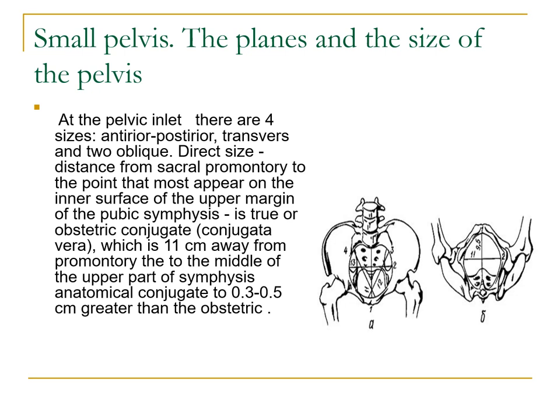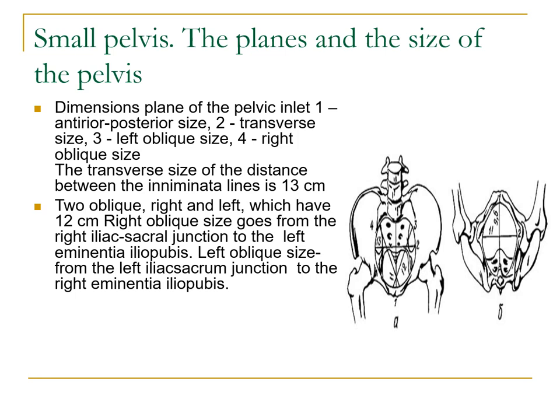At the pelvic inlet the four sizes are: anterior-posterior, transverse, and two obliques. The erect size — distance from the sacral promontory to the inner surface of the upper margin of the pubic symphysis — is the true or obstetric conjugate, usually 11 centimeters. The anatomical conjugate is from the promontory to the middle of the upper part of the symphysis. The transverse size between the inominata lines is 13 centimeters, and the two obliques, right and left, are usually 12 centimeters.